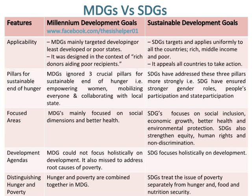Focused areas in MDGs mainly focused on social dimensions and better health. Whereas, SDGs focus on social inclusion, economic growth, better health and environmental protection. SDGs also strengthen equity, human rights and non-discrimination.